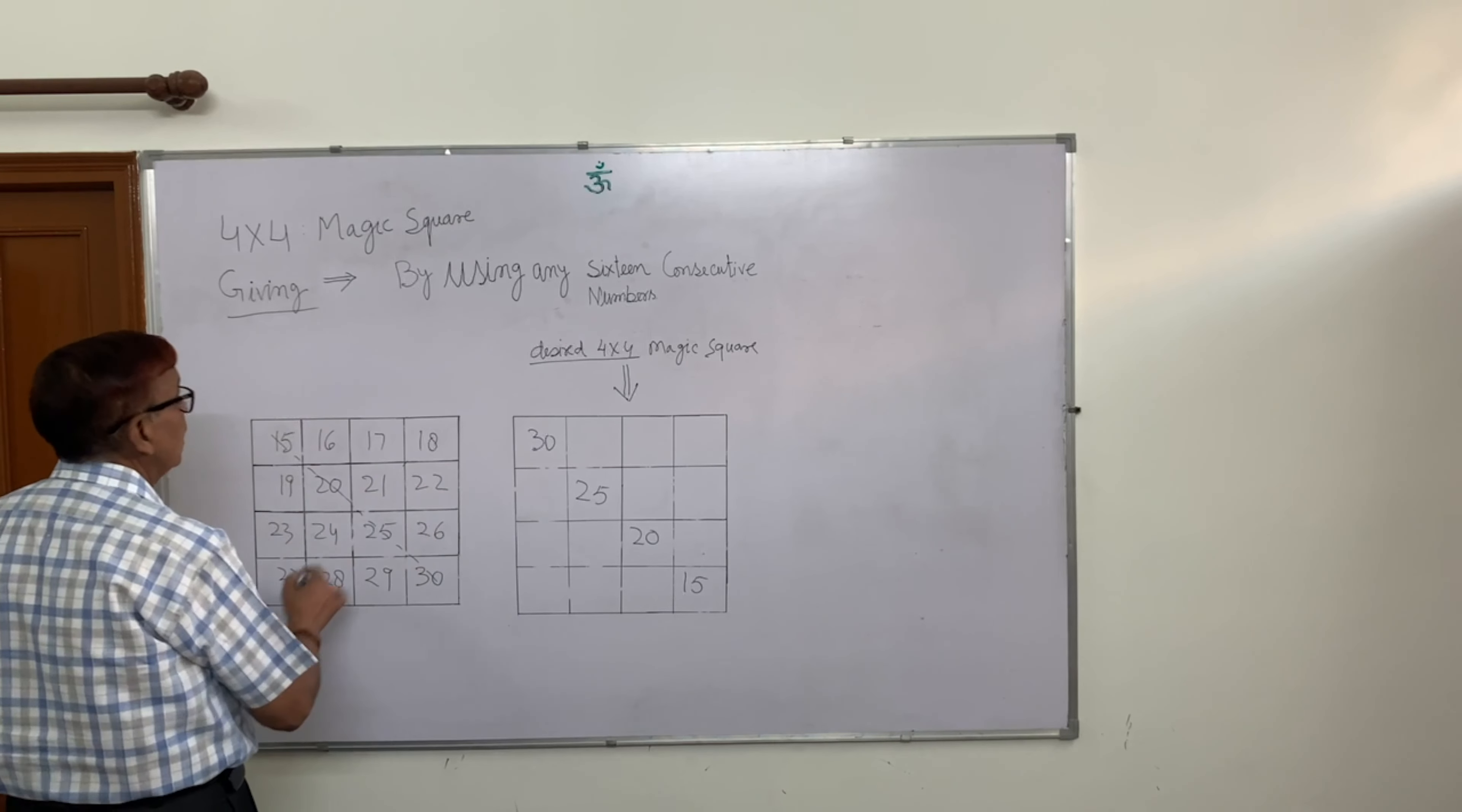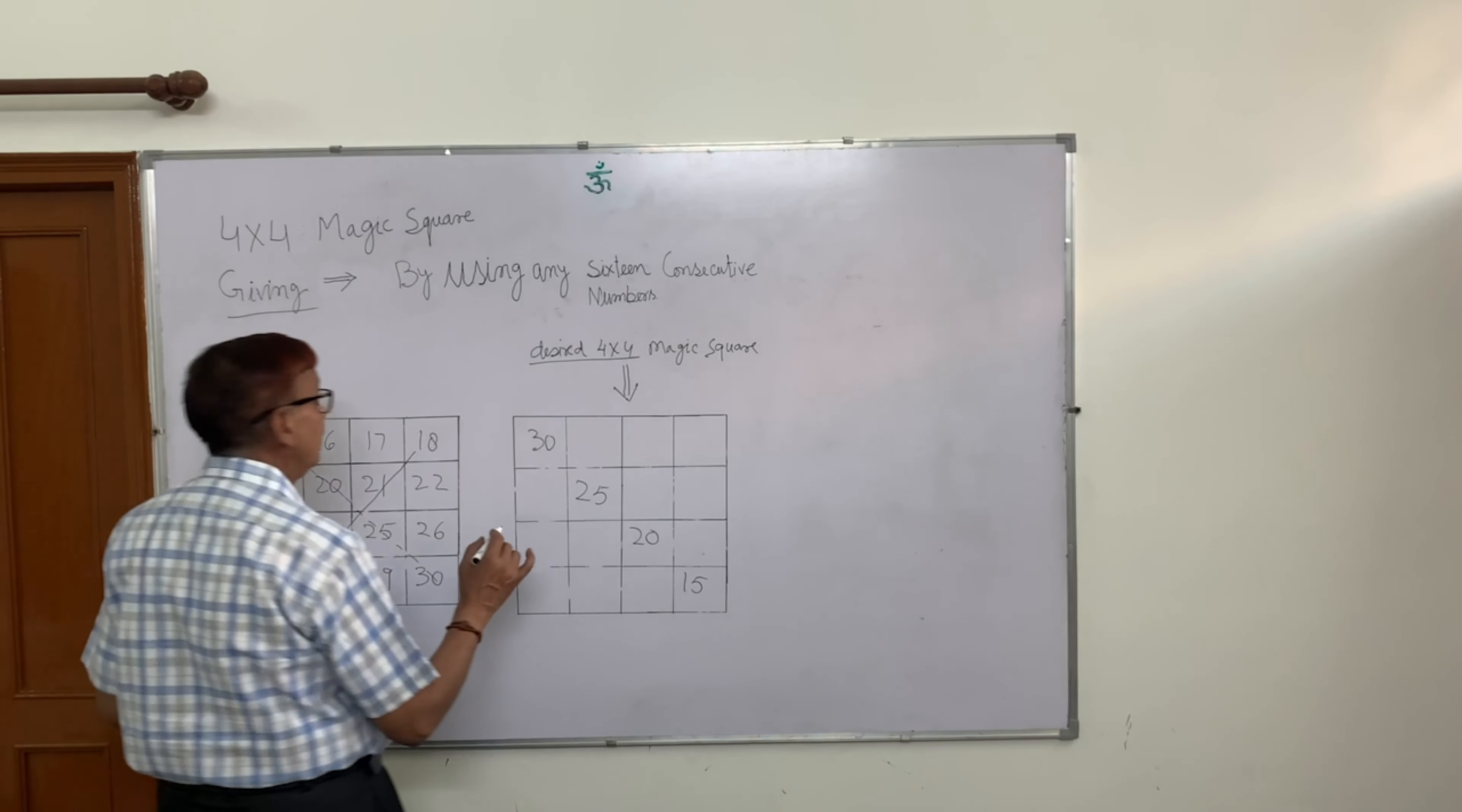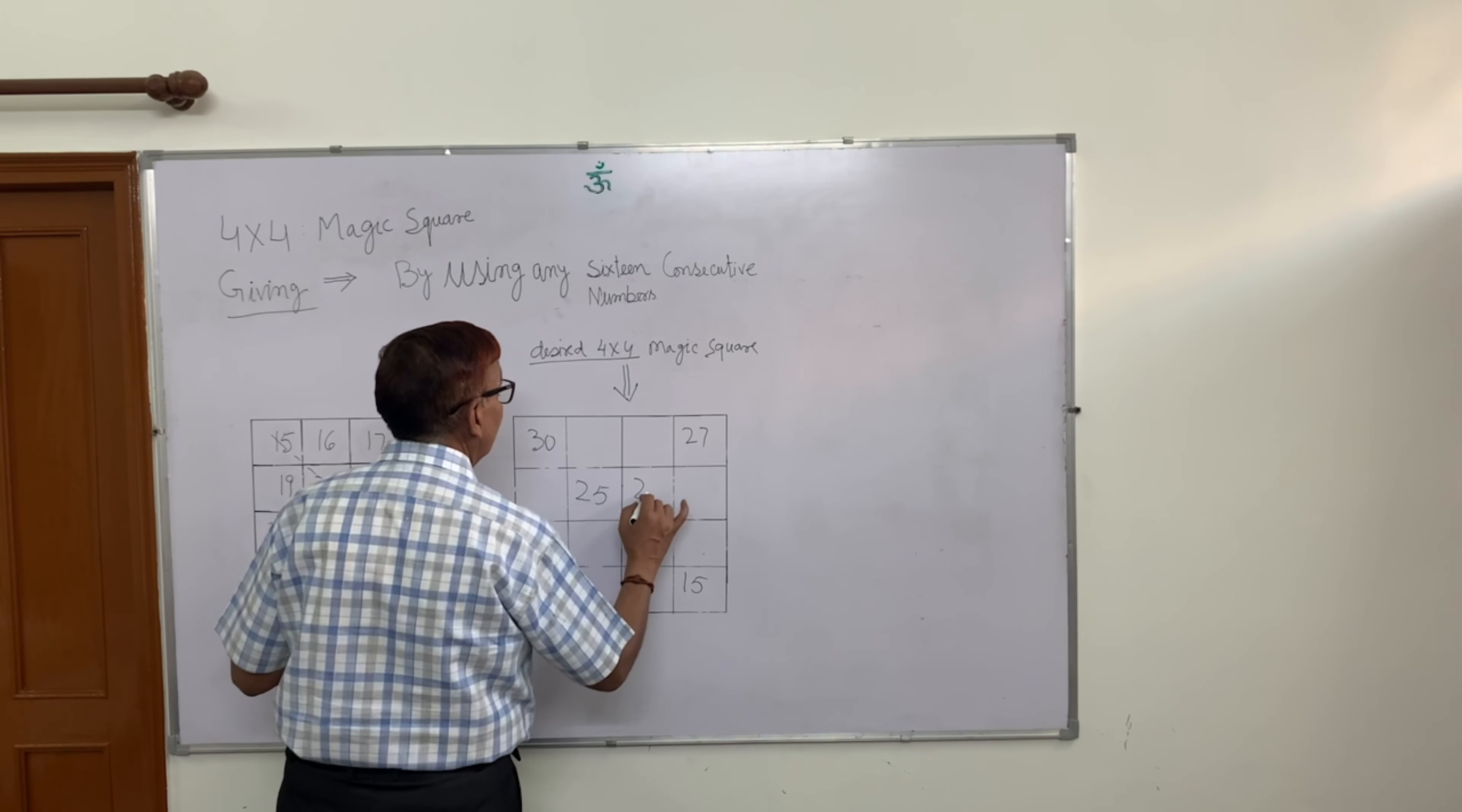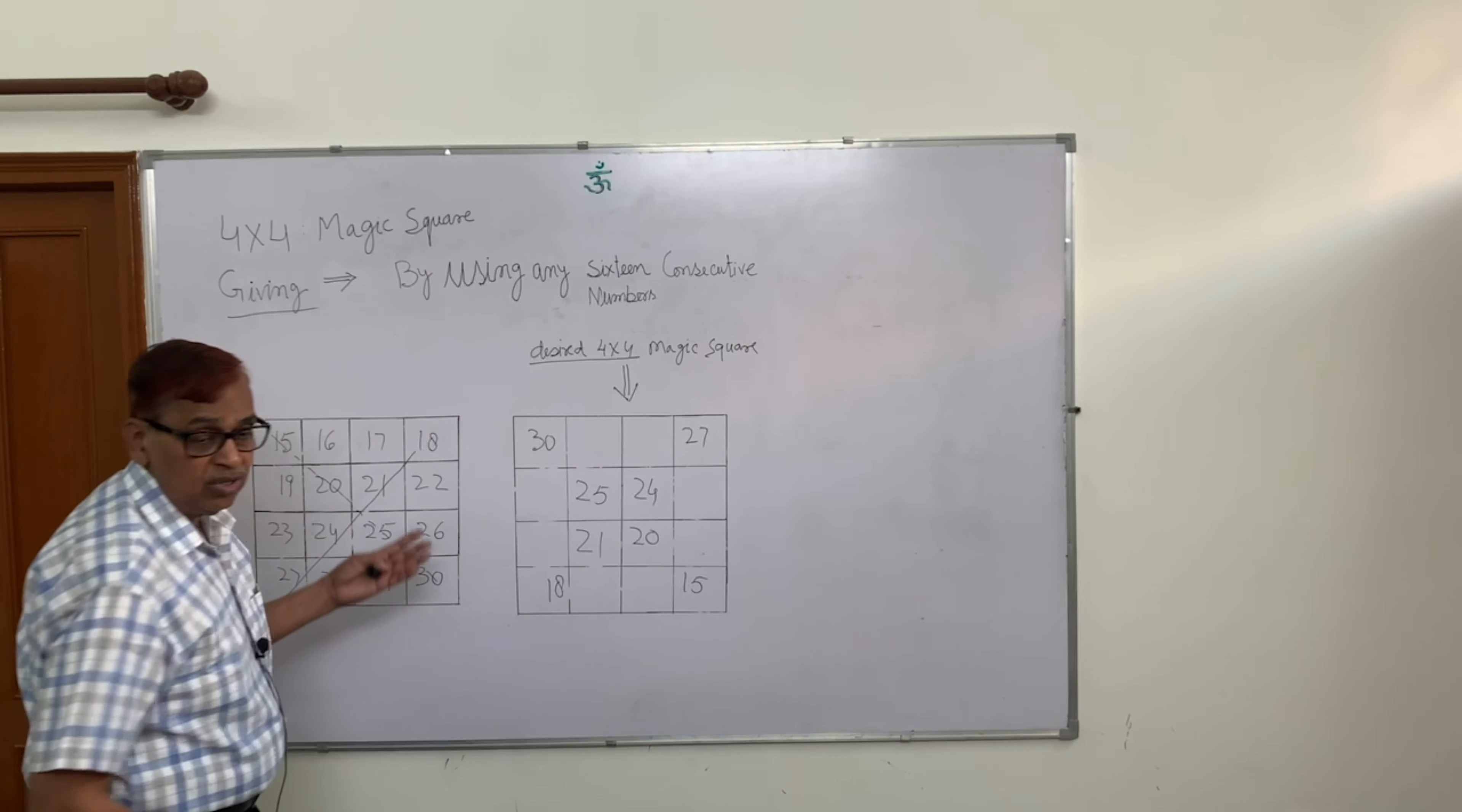Now you can do the diagonal here. I will write the diagonal element. So you will reverse the diagonal element. This is the diagonal element. 24, 21, and 18, which I have written, I will reverse the numbers per the students' request.